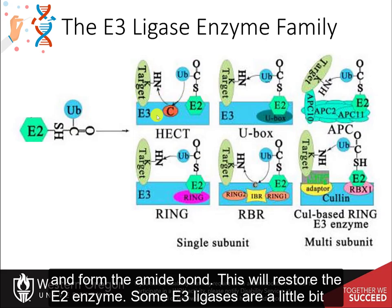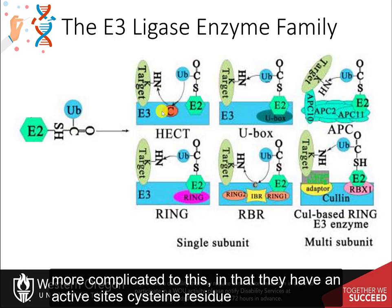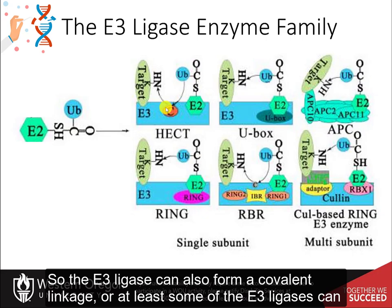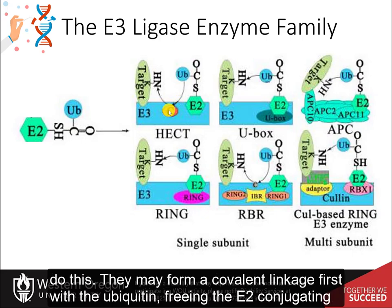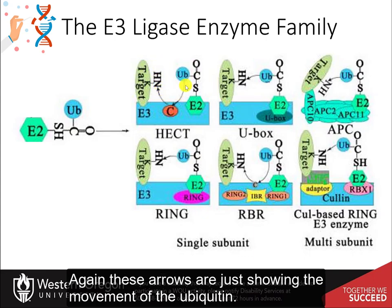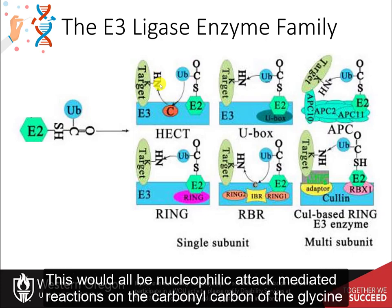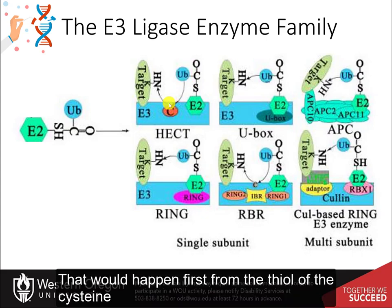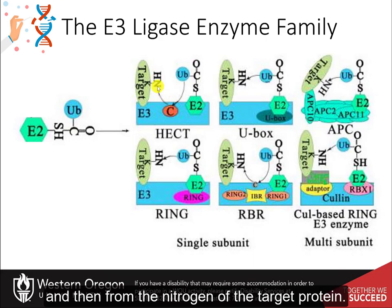Some E3 ligases are more complicated in that they have an active site cysteine residue that first captures the ubiquitin molecule from the E2 conjugating enzyme, forming a covalent thioester linkage and freeing the E2 conjugating enzyme prior to linking the ubiquitin with the target protein. This would involve nucleophilic attack mediated reactions on the carbonyl carbon of the glycine residue attached to ubiquitin — first from the thiol of the cysteine, and then from the nitrogen of the target protein.